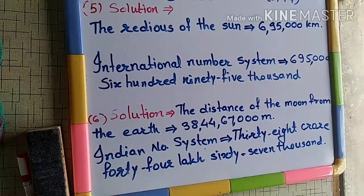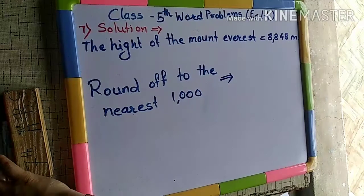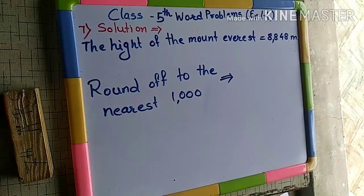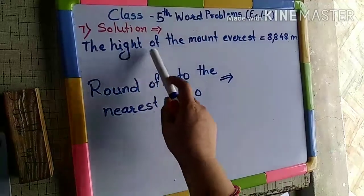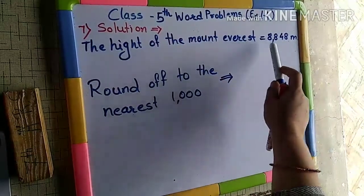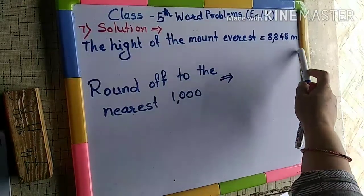Take its screenshot — you can complete it from the screenshot. Now see the 7th problem: the height of Mount Everest is 8,848 meters. Round it off to the nearest thousand. We have to write the number for Mount Everest, 8,848 meters, rounded off to the nearest thousand.